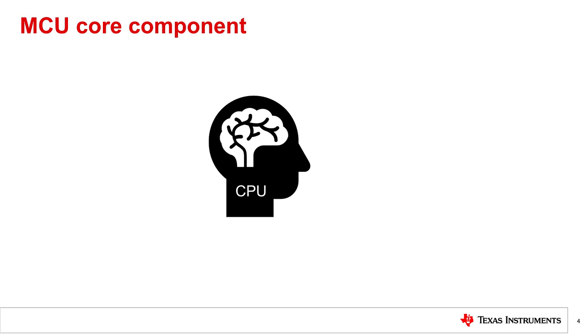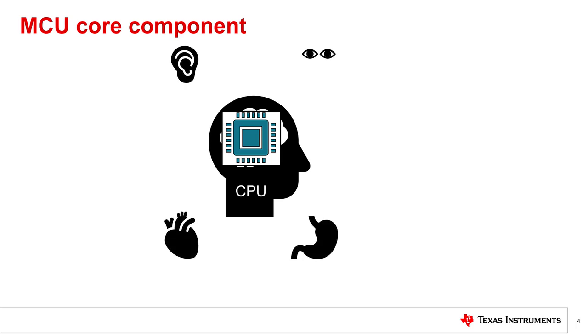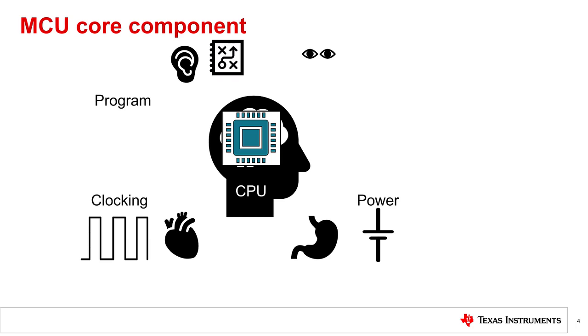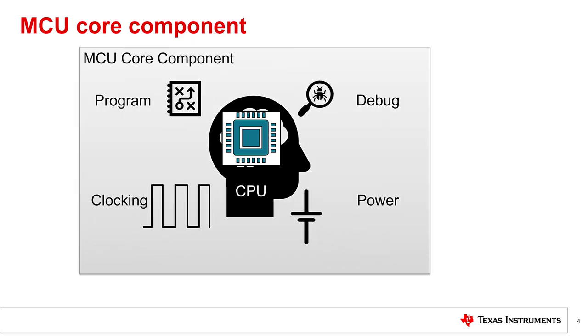First up is the core component of the MCU. Within the industry, core is commonly used to describe the CPU, or brain, of the microcontroller. For this discussion, the core component is comprised of said core and everything that supports it directly. The core controls everything inside the chip and typically does all of the calculations needed. Surrounding the core are modules essential for operation of the MCU outside of memory, including subcomponents like the power system, clocking, programming, and debug capabilities. The core may also get additional computation help from accelerators — think of these as additional brains that can do specific tasks independently and more efficiently than the core can.